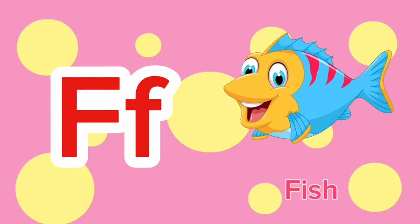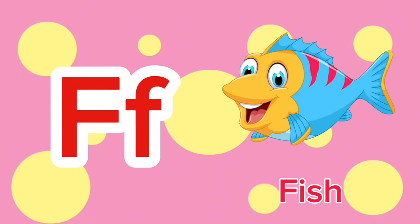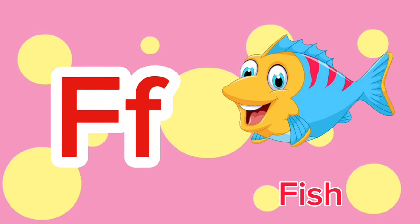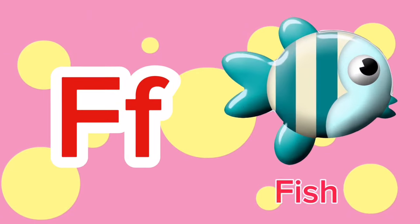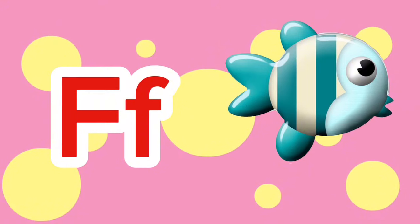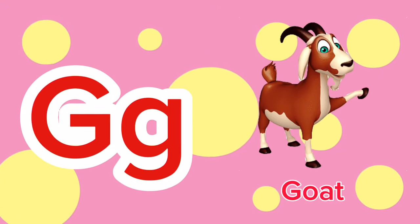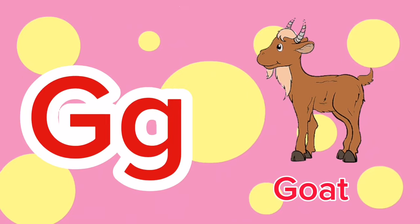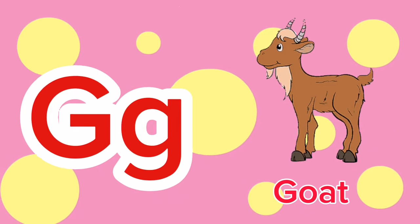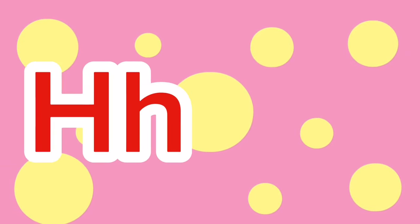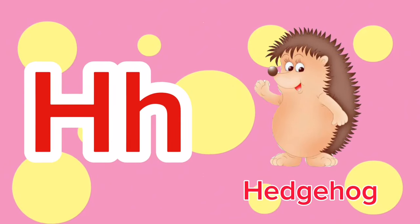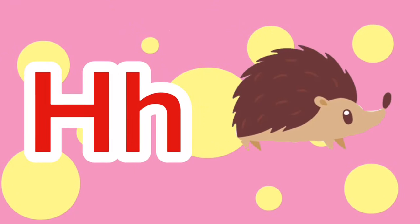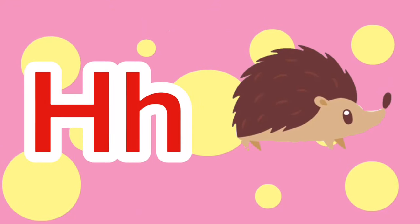F is for Fish. F-f-fish. F is for Fish. F-f-f. G is for Goat. G-g-goat. G is for Goat. G-g-g. H is for Hedgehog. H-h-hedgehog. H is for Hedgehog. H-h-h.